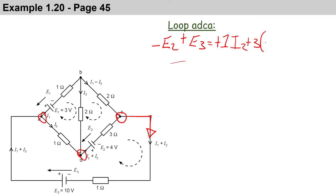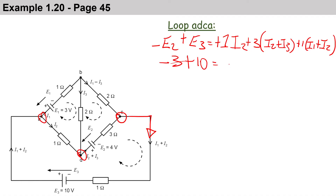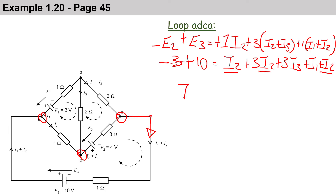Substituting the voltages: minus 3 volts plus 10 volts equals I2 plus 3·I2 plus 3·I3 plus I1 plus I2. Collecting like terms, we end up with positive 7 equals I1 plus 5·I2 plus 3·I3. This becomes equation 2.